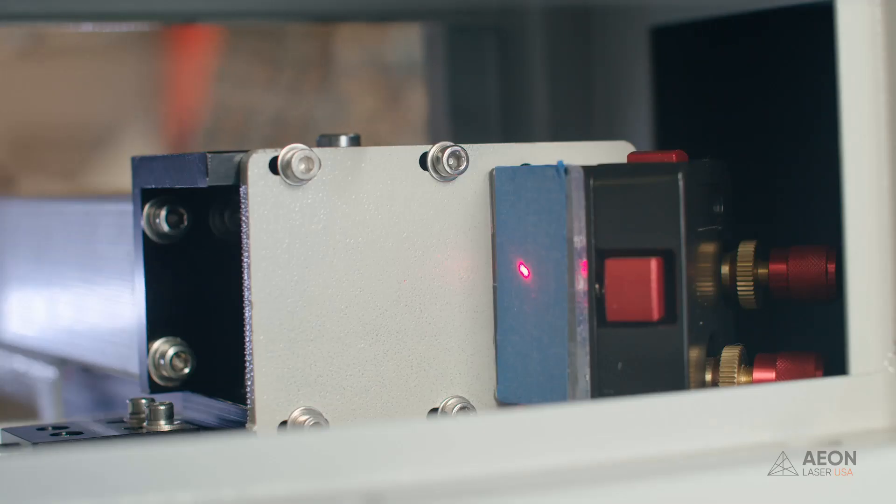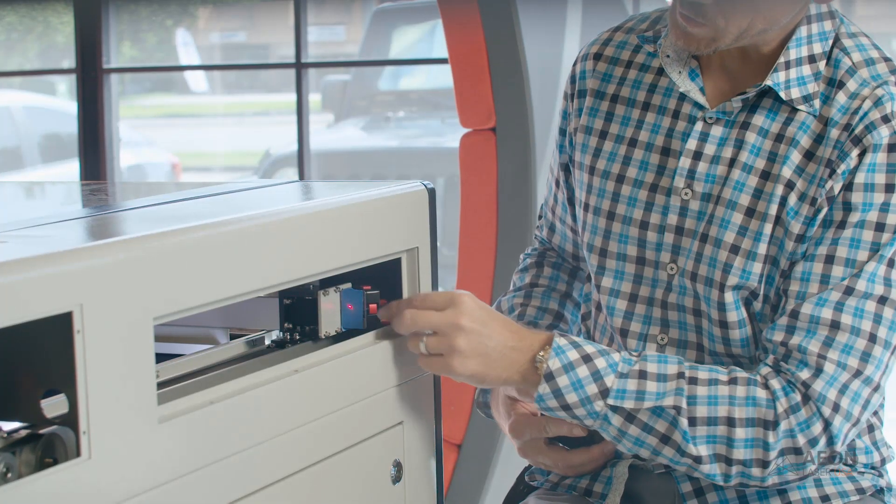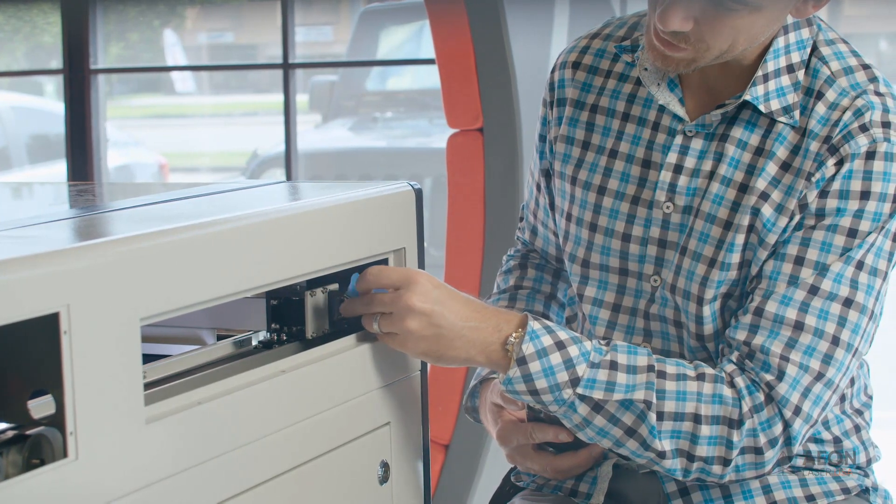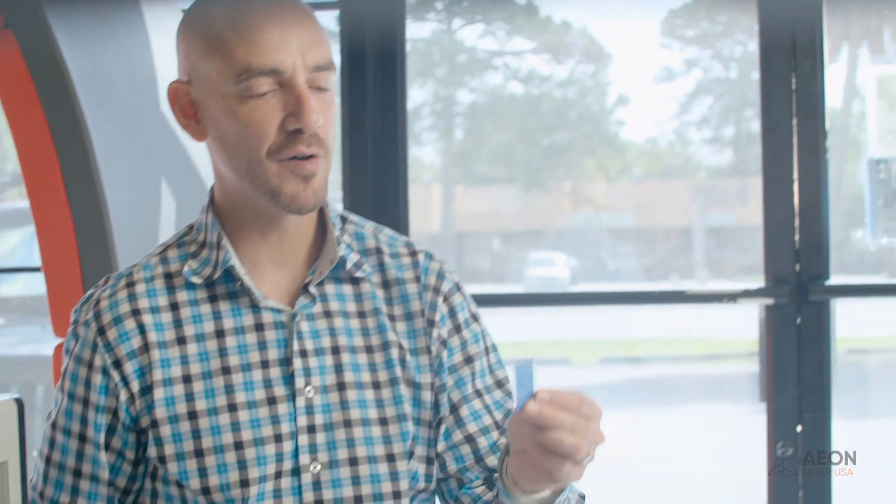So now with the gantry all the way to the front, we're ready to take our second shot. So again, we're going to lightly press the pulse button and deliver a burn to the tape. So now we're going to remove the target and compare it to that first picture we took of the first burn.